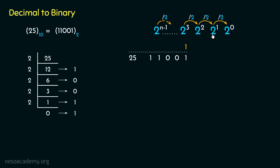The place value of the next bit is 2 to the power 1, essentially 2. The next bit has place value 2 squared, in other words 4. The next bit's place value is 2 cubed or 8. The most significant bit has place value 2 to the power 4, or 16 — because it is a 5-bit binary number, so the exponent is 5 minus 1, that is 4. Let's now check our claim: we add the place values underneath which the ones are placed. 16 plus 8 gives us 24, and 24 plus 1 is 25. So our claim was correct.